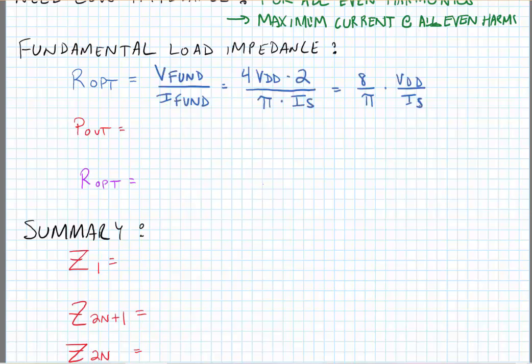The optimum termination resistance is 8/π times VDD divided by IS. But what we need to find is IS. So let's find the output power.